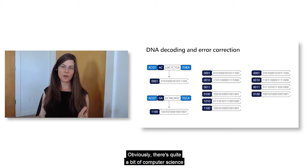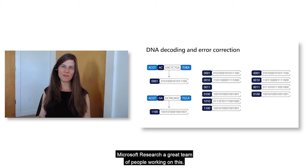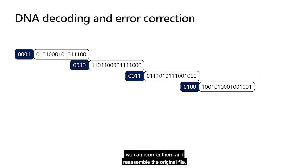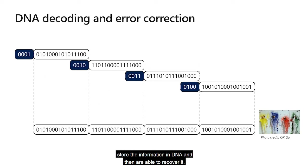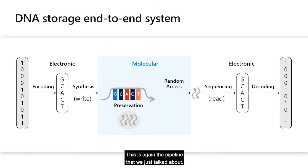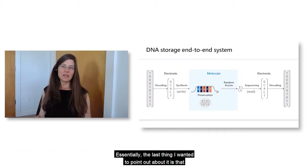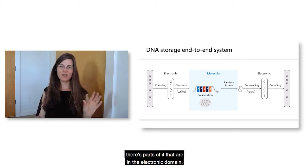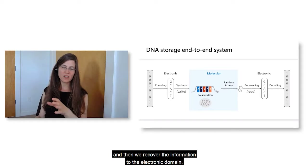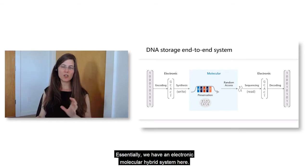In the encoding step we added redundancy, and we can use that redundancy now to recover the original data. There's quite a bit of computer science and coding theory that goes into creating these codes. Once we have these sequences of bits, we can reorder them and reassemble the original file. This is essentially the pipeline we just talked about — there are parts in the electronic domain, parts in the molecular domain, and then we recover information back to the electronic domain. We have an electronic-molecular hybrid system.